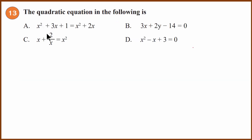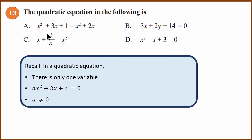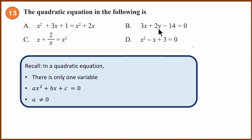Thirteenth question: which of the following is a quadratic equation? Option A: the x² terms cancel, so no ax² term remains — not quadratic. Option B: when simplified, x moves to the numerator making it a cubic equation. Option C: it has two variables, but a quadratic equation must have only one variable. Therefore option D is the answer.